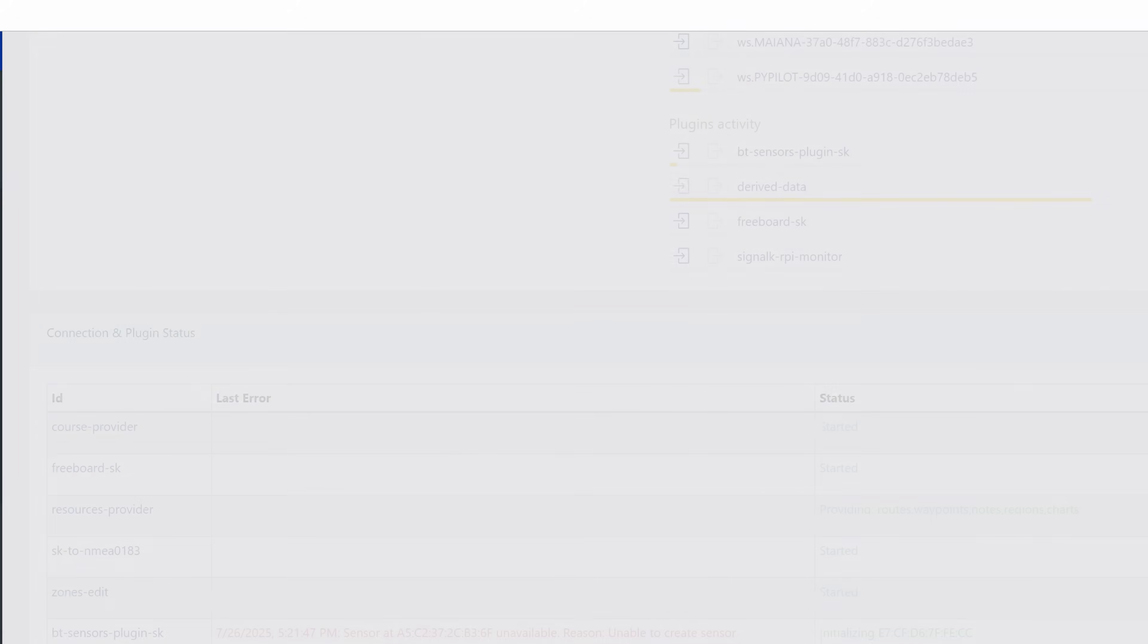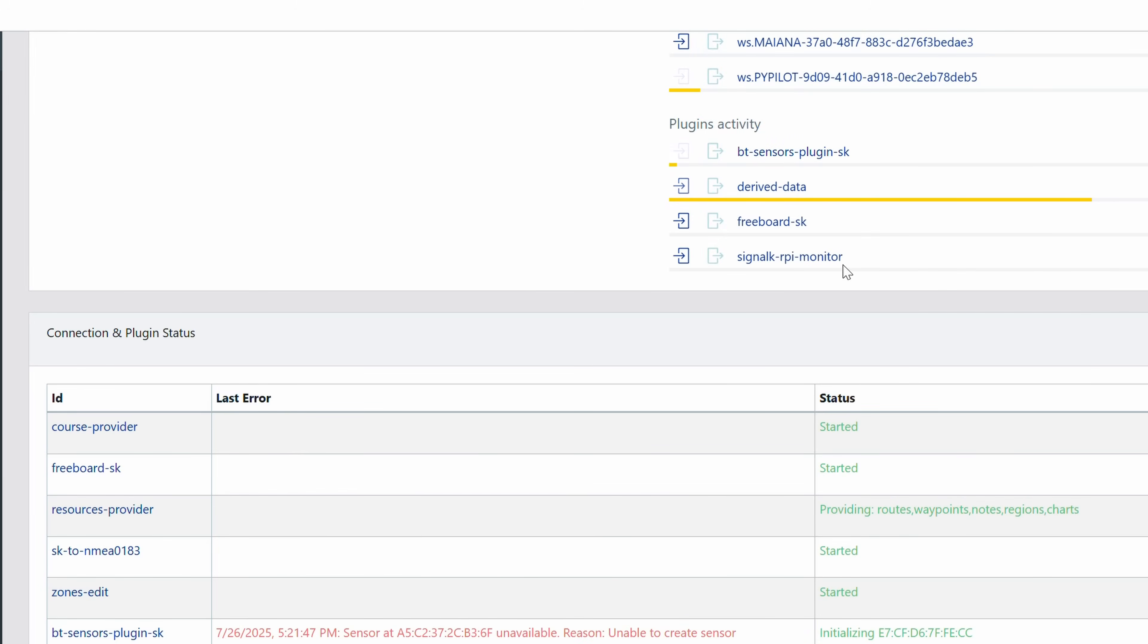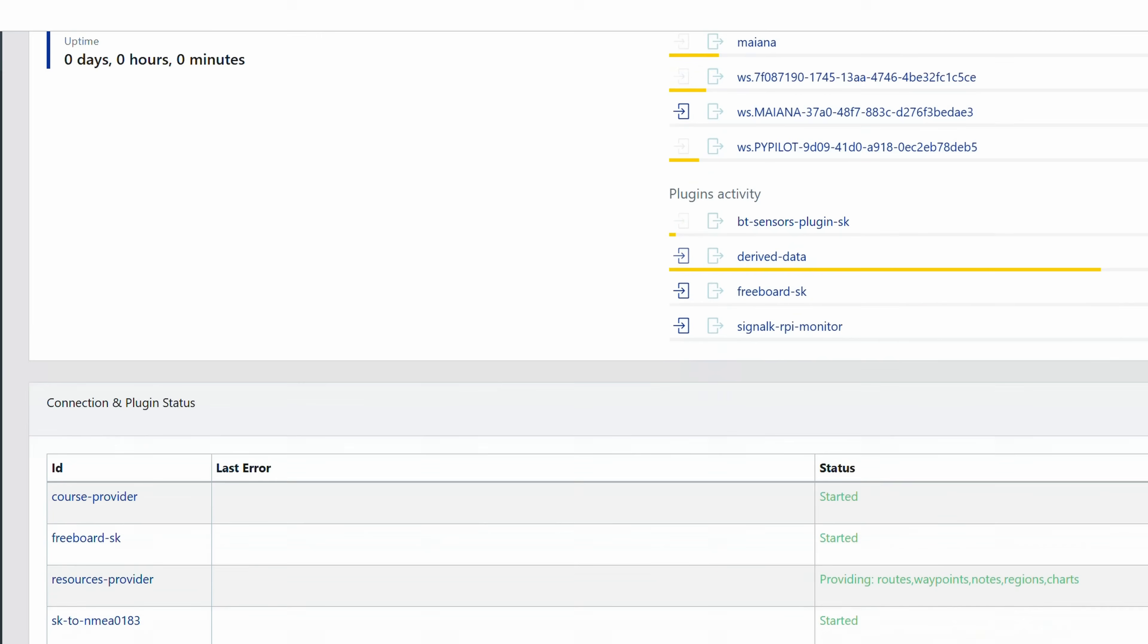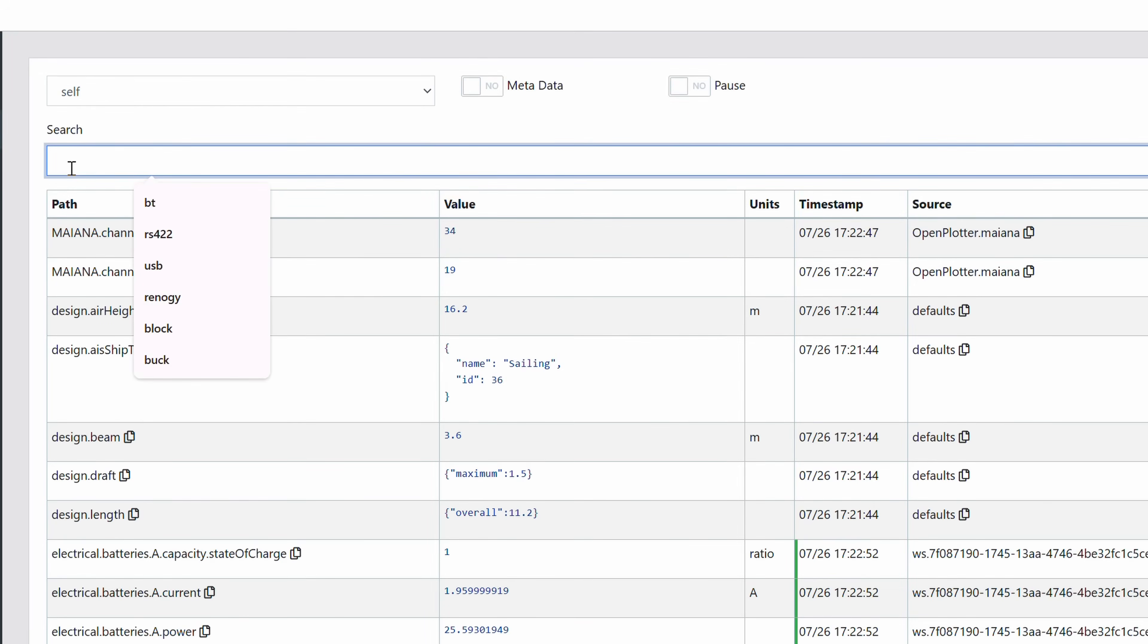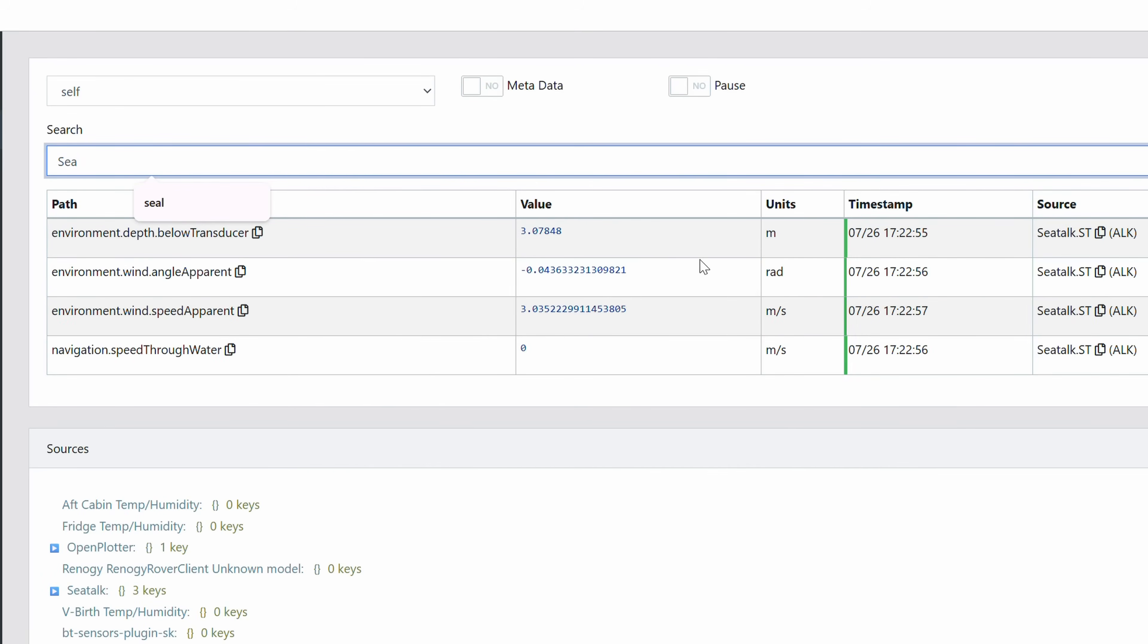Now, what we're going to do is go to the dashboard to see if we're getting data on that signal. You can see there's some data coming in. We're getting 3.2 deltas per second. So now we can take a look in data browser and see what we're getting. If we put in SeaTalk in here, we can see that we're getting depth below transducer, apparent wind angle, apparent wind speed, and speed through water, which is currently at zero but we're still getting it.